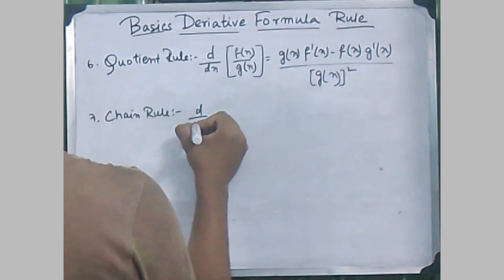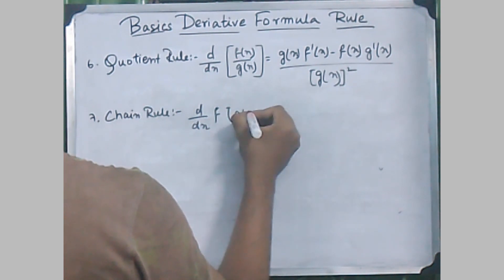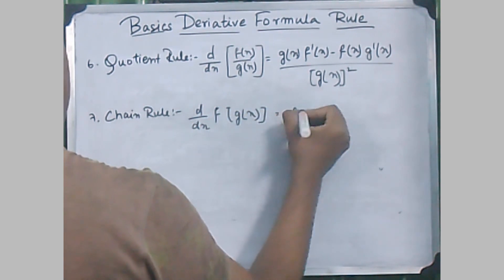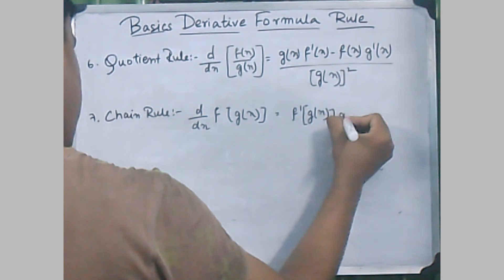The seventh rule is known as the chain rule. It is very important in differentiation, where d/dx of f[g(x)] will